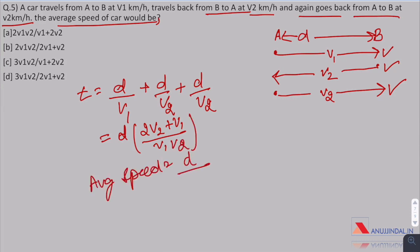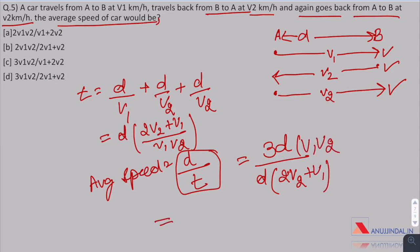Total distance upon time. So we know total distance is 3D and time is D times 2V2 plus V1 upon V1 V2 which is 3V1 V2 upon 2V2 plus V1. Option C.